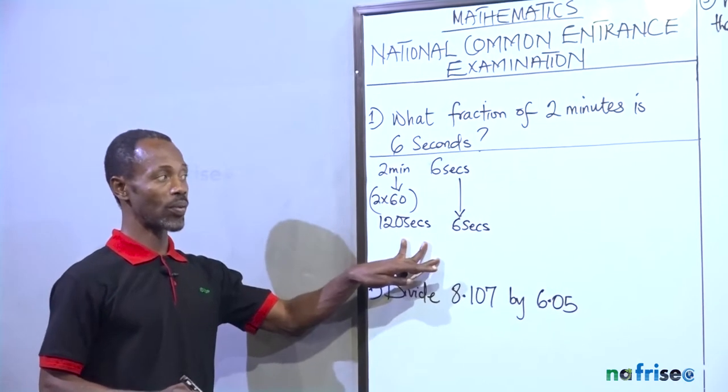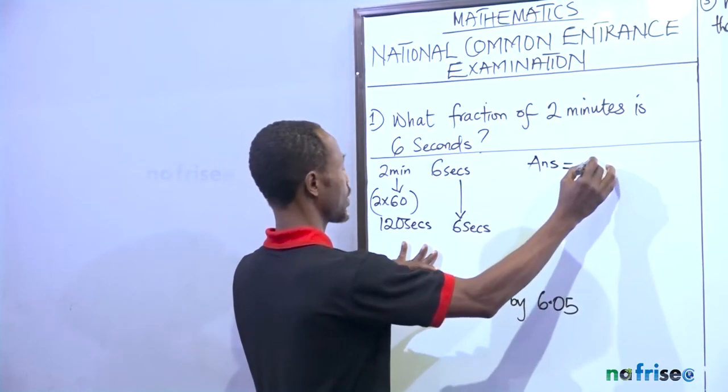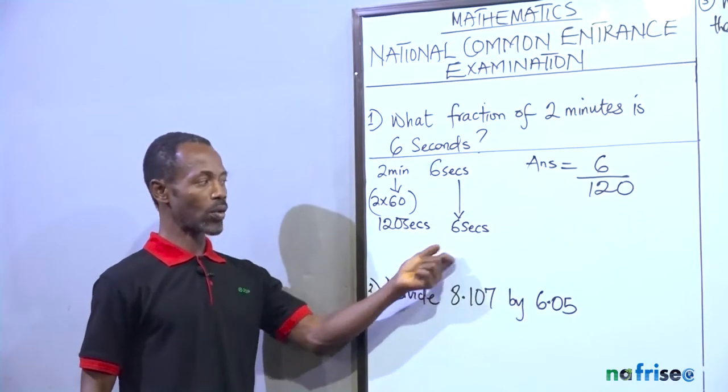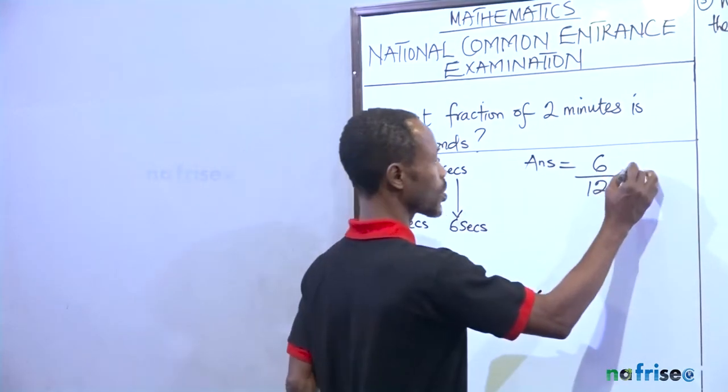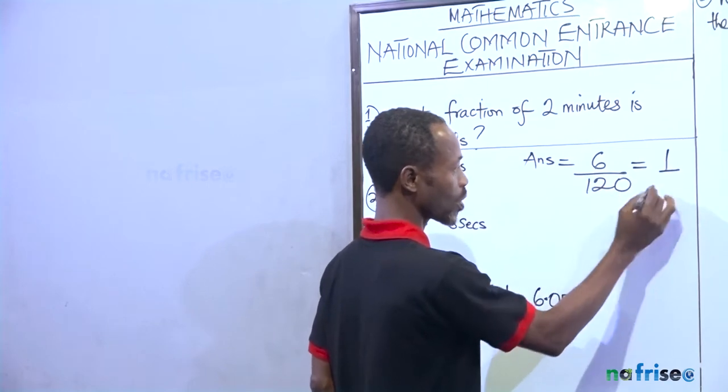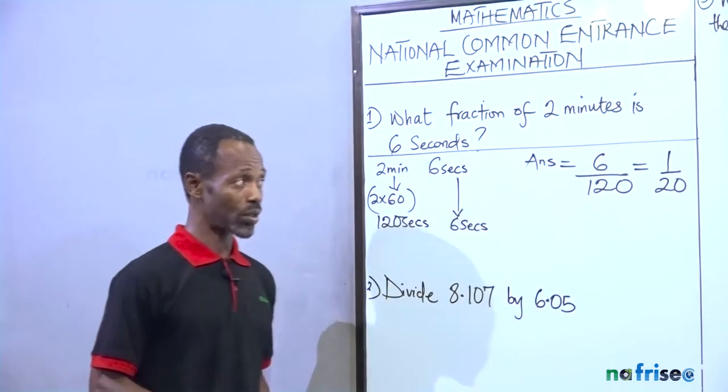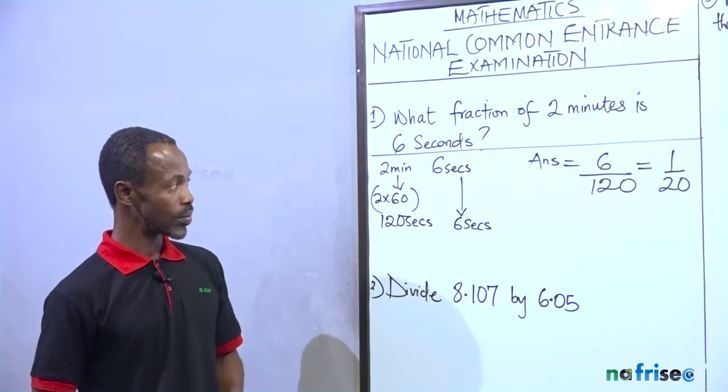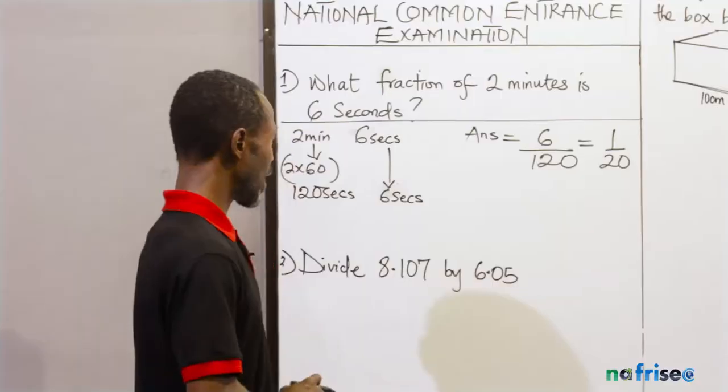what you're going to do is this: Since it's a fraction they're requesting for, then the answer will go like this. Answer equals 6 over 120. This 6, the smaller one over the bigger one. So that will give us 6 here, 1. 6 here will give me 20. So you have 1 over 20 as the fraction. This is the answer.